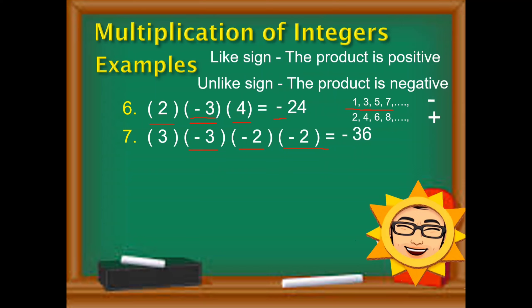Let's work on number 8: negative 5 times negative 2 times 15. Bilangin natin ang negative integers sa given — 1 and 2. And 2 is an even number. So dahil even number, immediately positive na yung sagot. Di na natin ilalagay yung sign kasi we know that already — kapag walang sign, that's positive. So multiply na lang natin: 5 times 2 times 15, that's 150. Therefore, negative 5 times negative 2 times 15 is equal to positive 150.